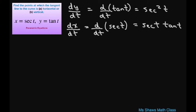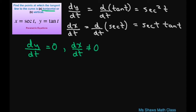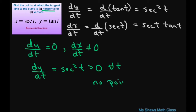The tangent line is horizontal when the derivative of y with respect to t equals 0 and the derivative of x with respect to t is not equal to 0. Our derivative of y with respect to t equals secant squared of t, which is always positive for all values of t. So there are no points where the tangent line is horizontal.